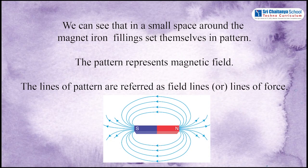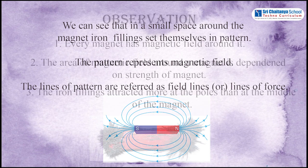Students, what do you observe here? You can see that in a small space around the magnet, iron fillings set themselves in a pattern. The pattern represents magnetic field. The lines of pattern are referred as field lines or lines of force.